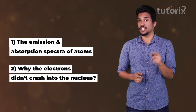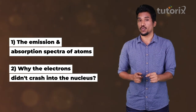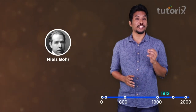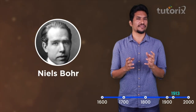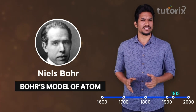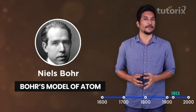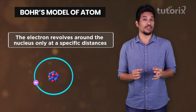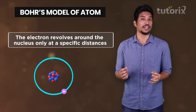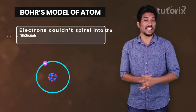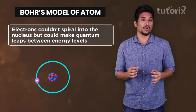So in 1913, scientist Niels Bohr introduced his famous Bohr model of the atom, which is still the basic structure used today. His model stated that electrons revolve around the nucleus only at specific distances. According to his model, electrons couldn't spiral into the nucleus but could make quantum leaps to other energy levels.